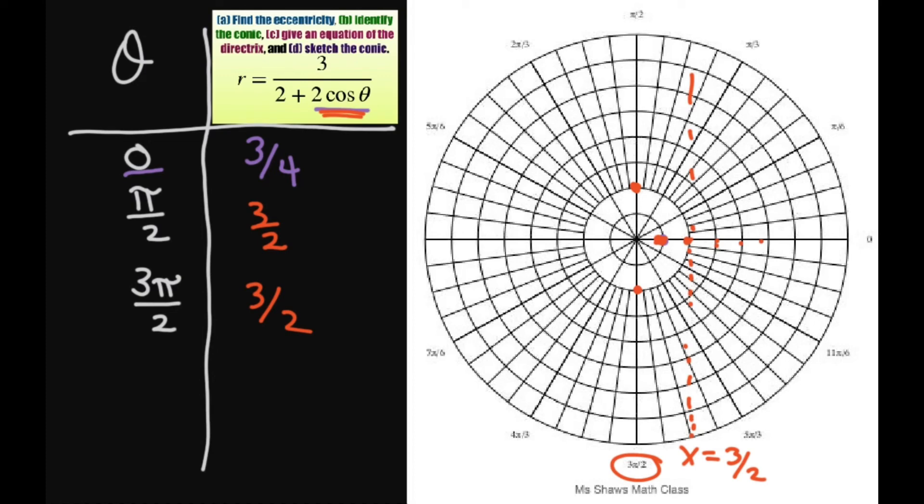So it's going to open to the right, like this. Because our directrix is here, it has to open away from the directrix. There's your graph. This is your origin.